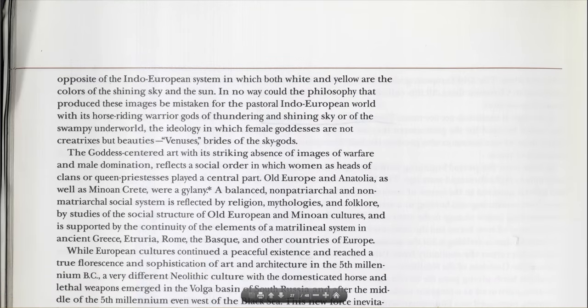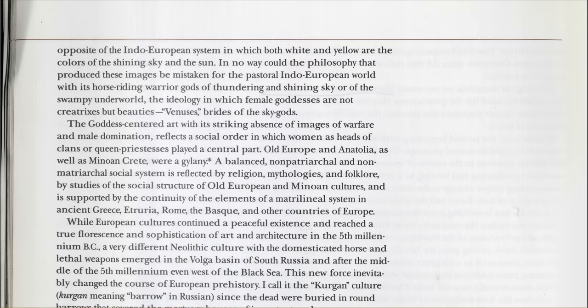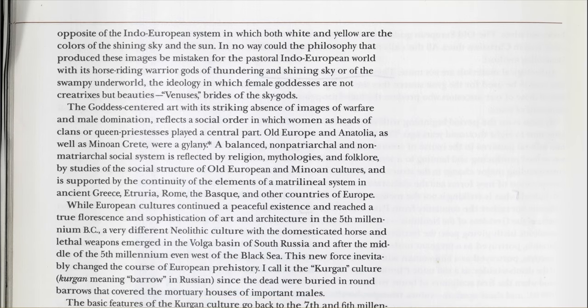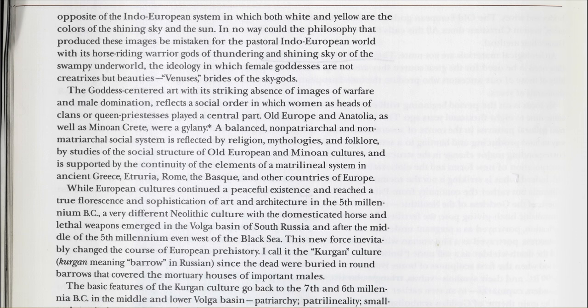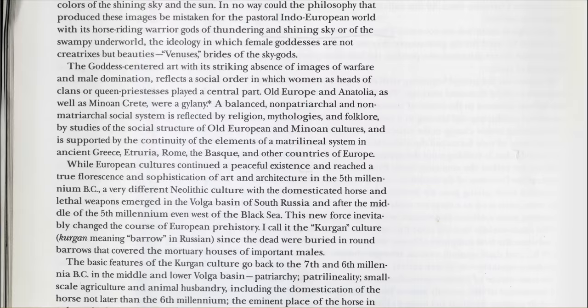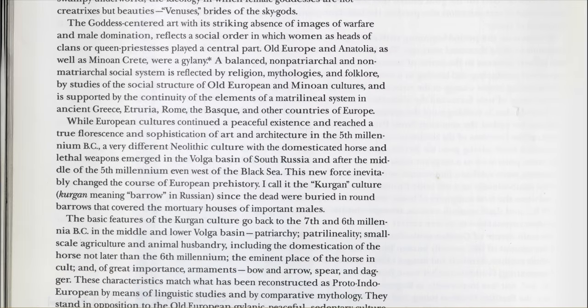The opposite of the Indo-European system, in which both white and yellow are colors of the shining sky and the sun. In no way could the philosophy that produced these images be mistaken for the pastoral Indo-European world, with its horse-riding warrior gods of thundering and shining sky, or the ideology in which female goddesses are not creatixes but beauties, venuses, brides of the sky gods. The goddess-centered art, with its striking absence of images of warfare and male domination, reflects a social order in which women as heads of clans or queen-priestesses played a central part. Old Europe, Anatolia, and Minoan Crete were gilanic.